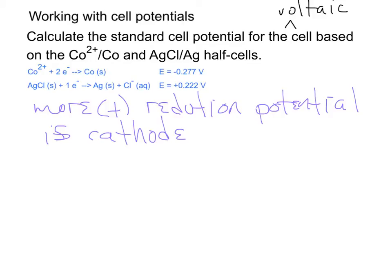So the more positive is the cathode, and then once you've done that, then it's simply a matter of E cell equals the reduction potential for the cathode minus the reduction potential for the anode.